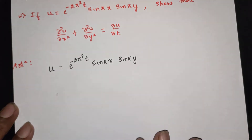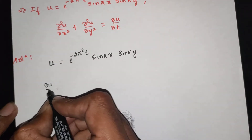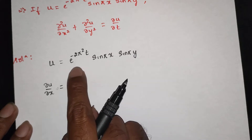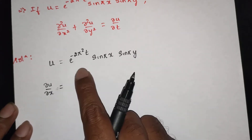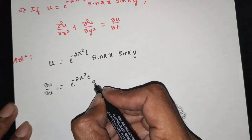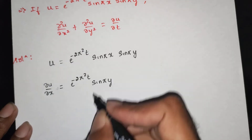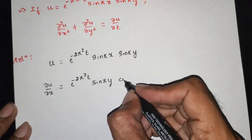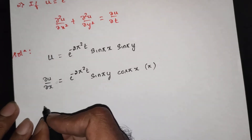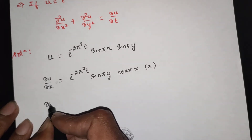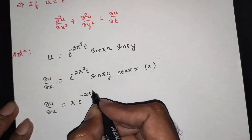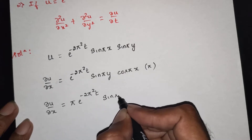First, find dou squared u by dou x squared. First find dou u by dou x. Differentiating with respect to x, the t term and y function are constant. Applying the chain rule: dou u by dou x is equal to pi into e power minus 2pi squared t, sin(pi y) cos(pi x).